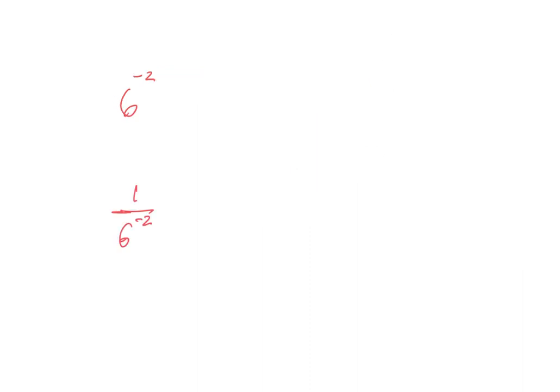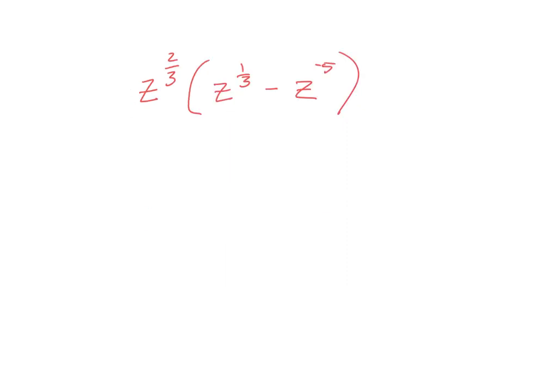Negative exponents — recall when we were doing negative exponents, that means if I want to simplify, I have to bring that to the other side of the fraction bar, so it would be 1 over 36. Here, I have 1 over 6 to the negative 2. The negative 2 — move whatever the negative exponent is on to the other side of the fraction bar. So then this would be 36.